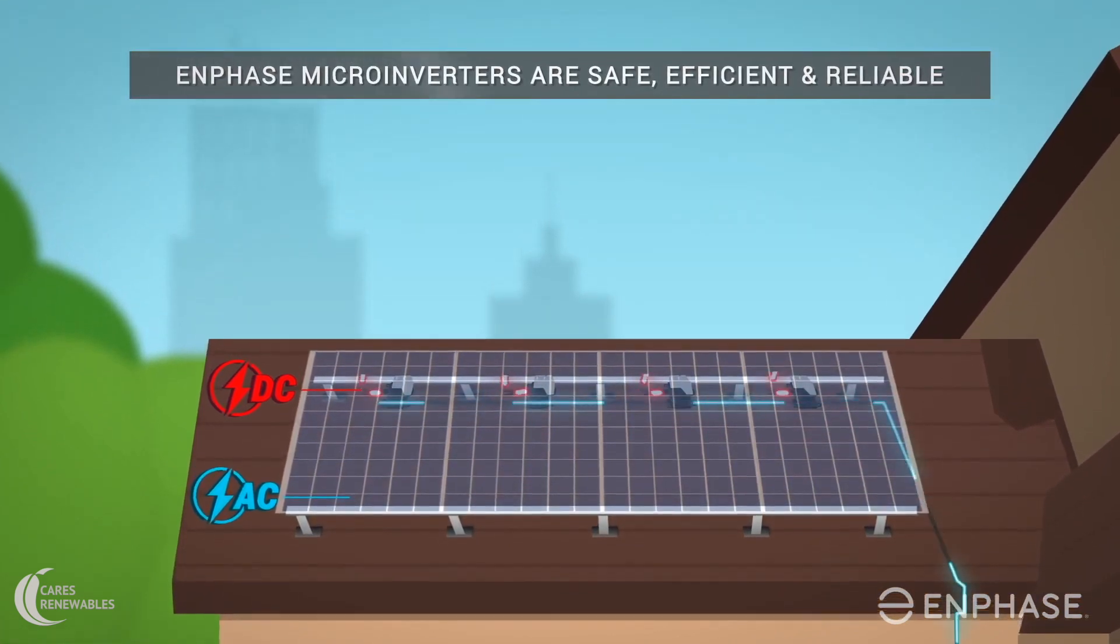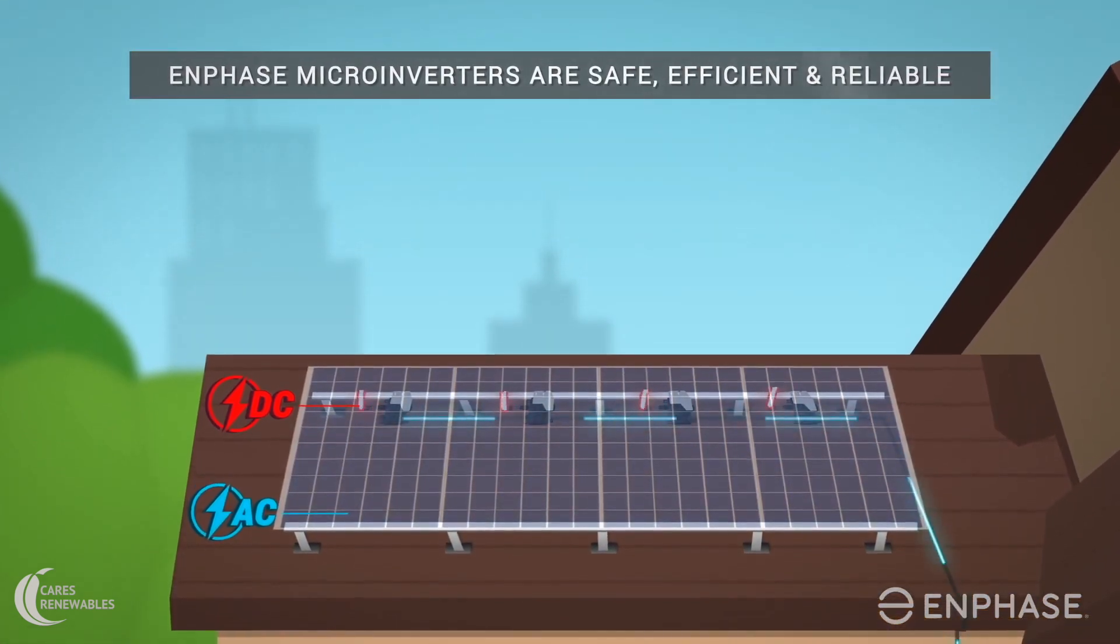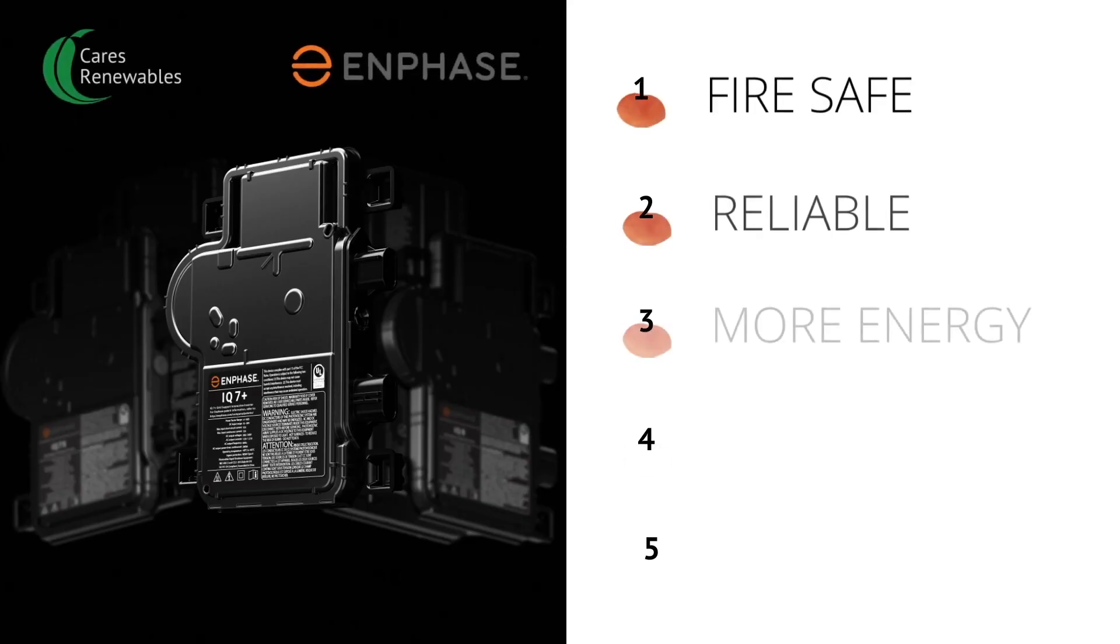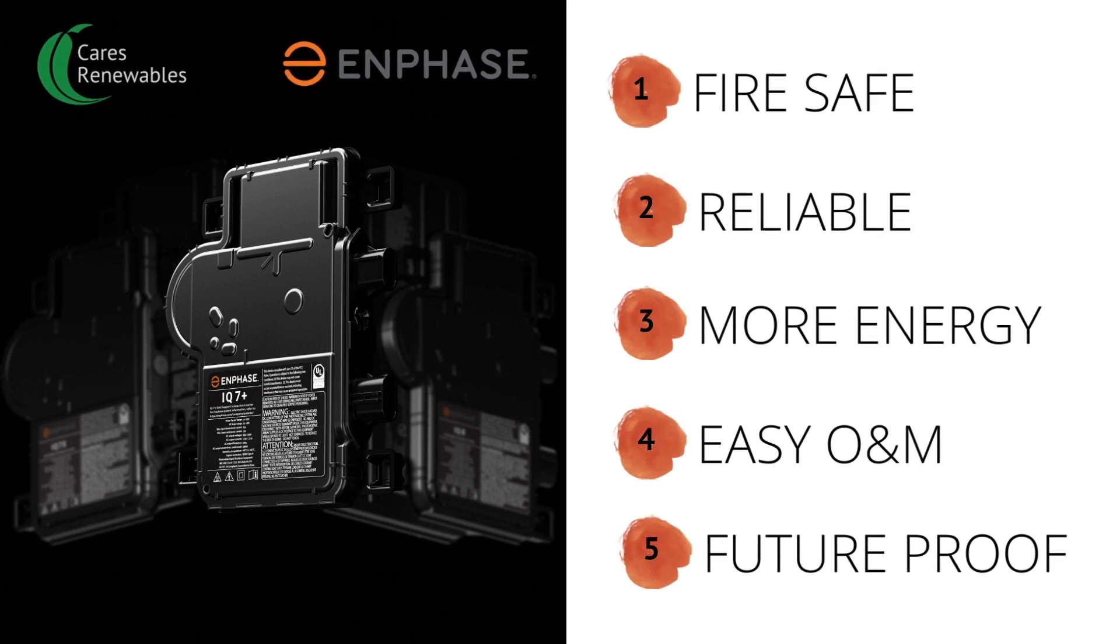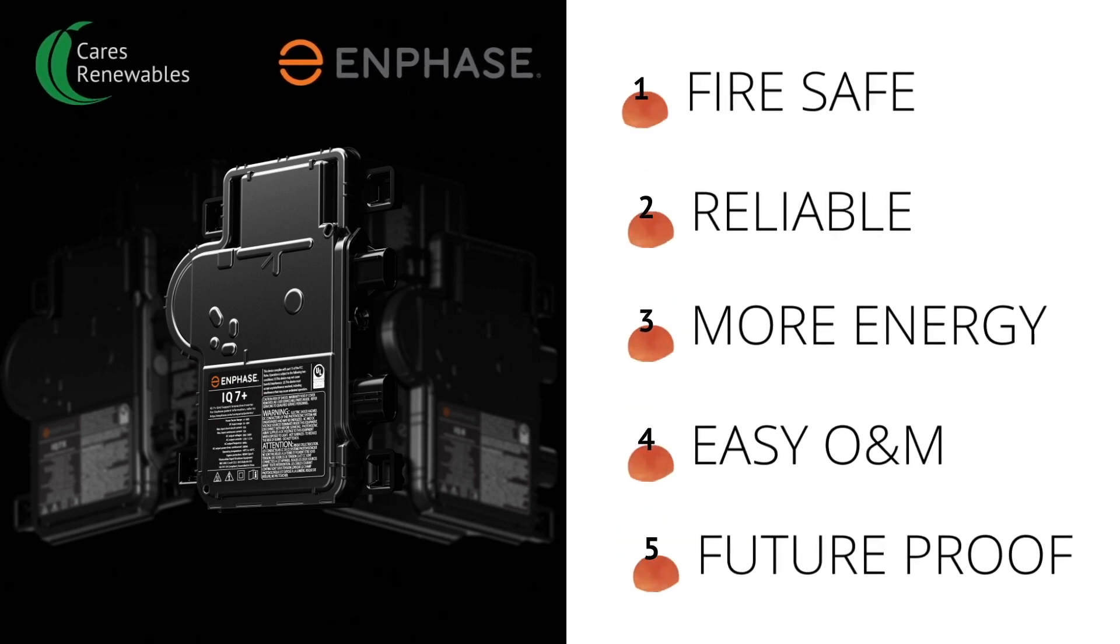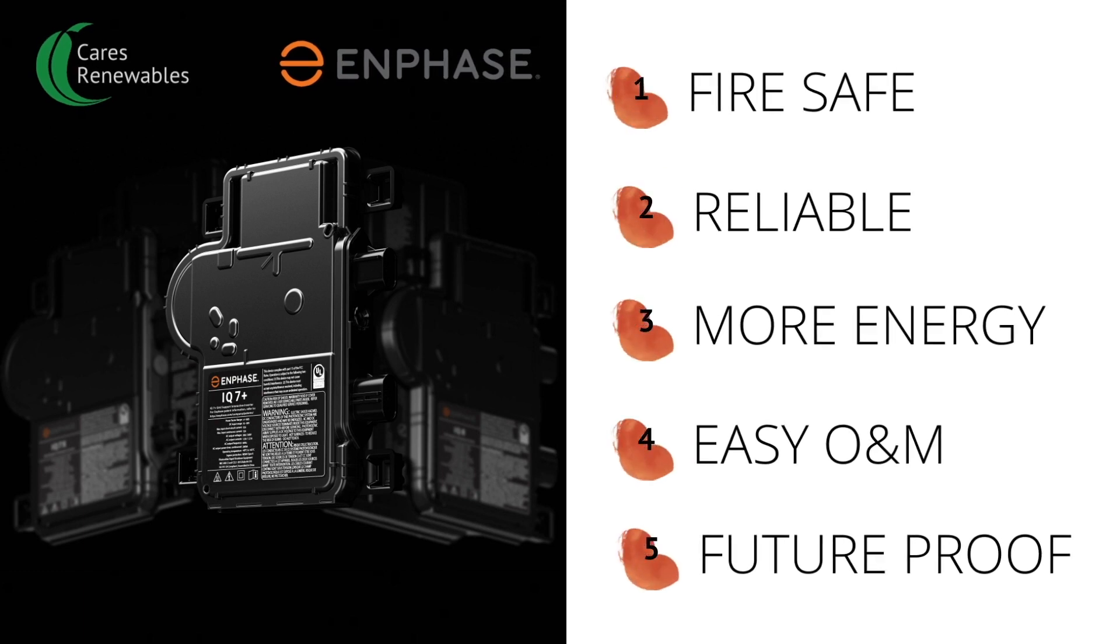Enphase has a lot of advantages over traditional solar inverters. To summarize, Enphase is the safest and the most reliable solar inverter. Microinverter extracts more energy from solar modules, enables easy maintenance, and is future-proof.